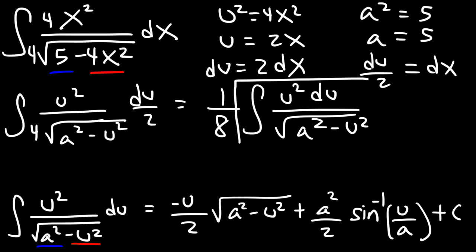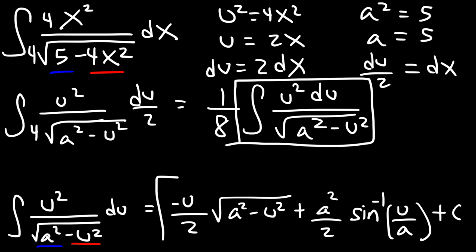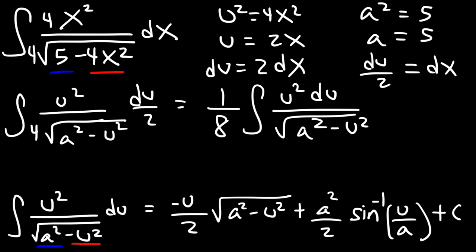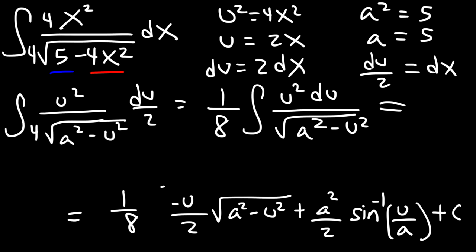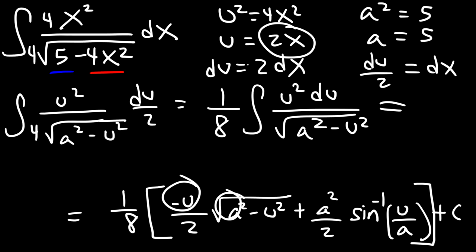We substitute this integral using the formula, multiplying that expression by 1 over 8. Then we replace u with 2x, a squared with 5, and a with the square root of 5.